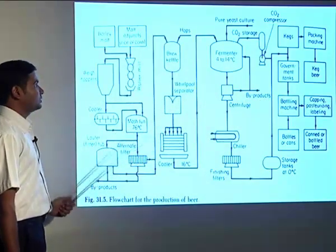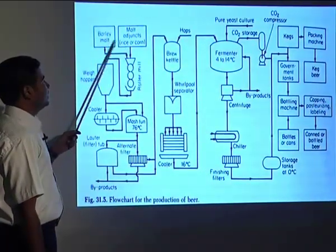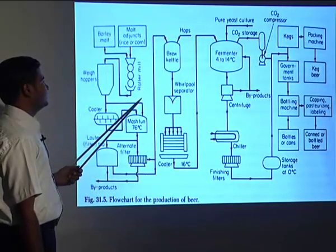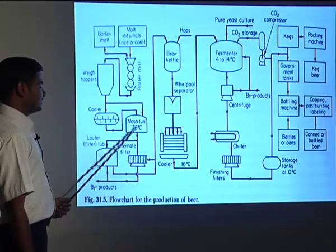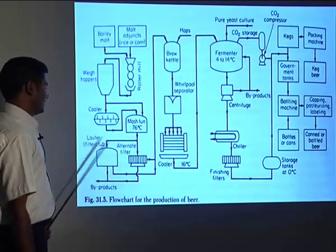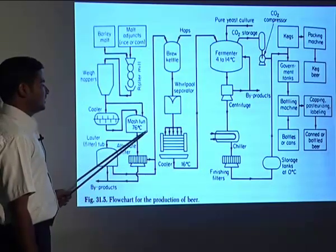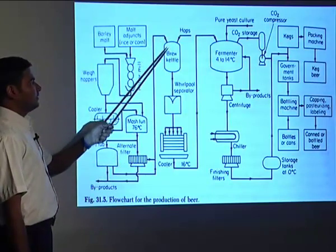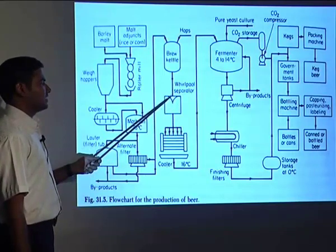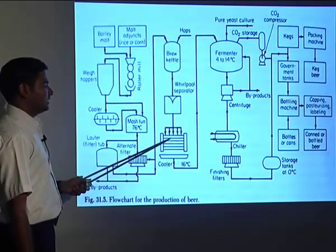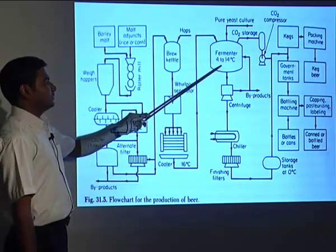This is the flowchart for the production of beer. Barley malt, rice, or corn is taken as raw material and rolled. The hoppers are also rolled, then cooled. The mash tun is operated at 76°C where the grains are roasted. Filtration — using an alternative filter — filters the raw material. Hops are added and the mixture goes to the brew kettle, then the vapor separator separates the grains and waste materials.